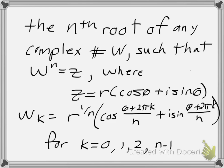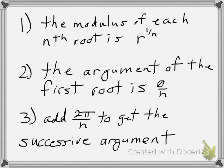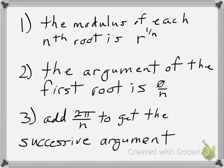So we need to identify what r is — r is our modulus — what n is, which is 3 in this case, and we need to figure out our theta. Looking at our complex number, we have our a and b, so a is 1 and b is 1, both positive. There are three other things to remember: the modulus of each root is r to the 1 over n, the argument of the first root is theta over n, and we add 2 pi over n to get the successive argument. That describes this equation, just another alternate way of looking at it.